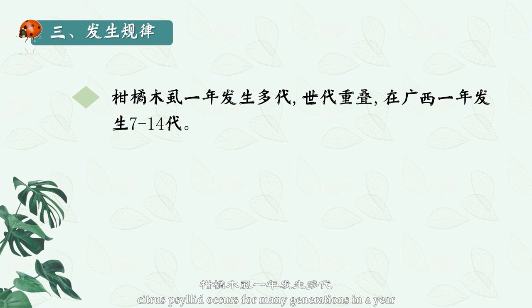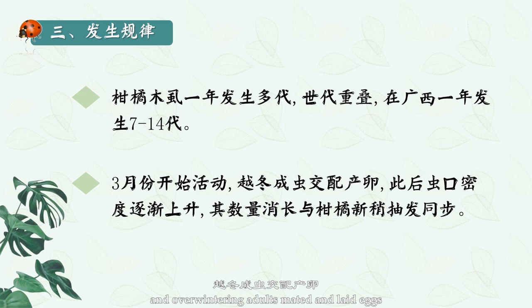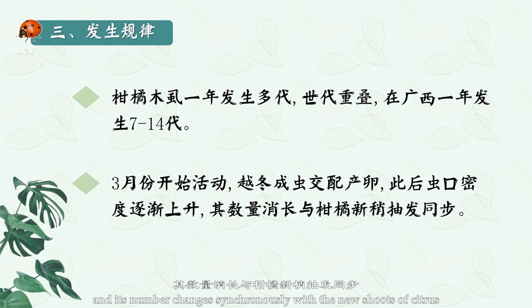Occurrence regularity of citrus psyllid. Citrus psyllid occurs for many generations in a year with overlapping generations — 7 to 14 generations per year in Guangxi. Activities begin in March when overwintering adults mate and lay eggs. Since then, the population density gradually increases, and its numbers change synchronously with the emergence of new shoots on citrus plants.